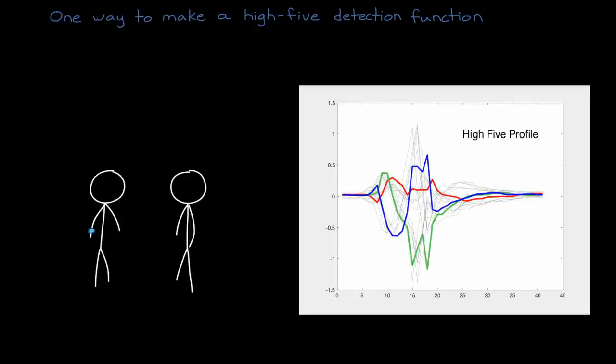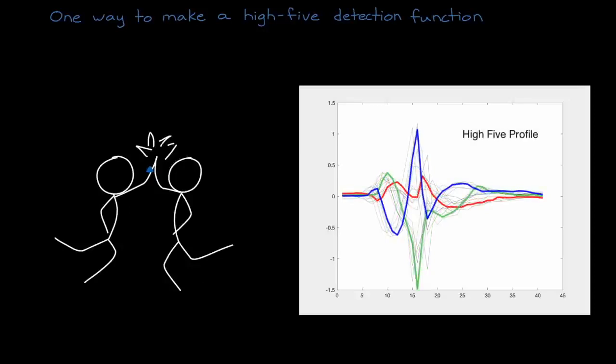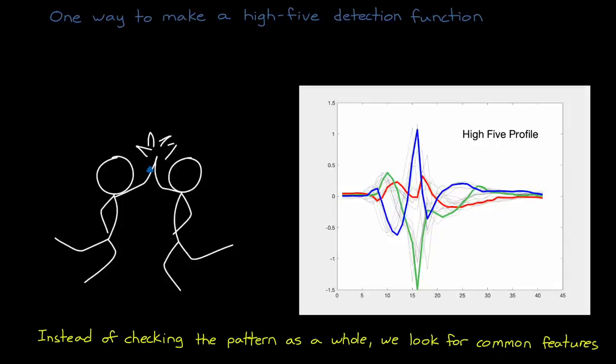So instead of having a database of millions of profiles that we need to check, you know, one for every possible type of high five, we might be a little smarter about it, and realize that instead of looking at the pattern as a whole, which can have wild variations, maybe we can find a set of features that they all have in common, and just check for those.